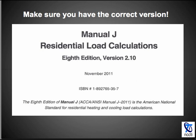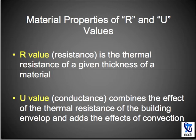Also be aware that we're using the full version, not the abridged. Let's go over some material properties for R and U. R value — resistance — is the thermal resistance of a given thickness of a material. The U value is the opposite; it's the conductance.